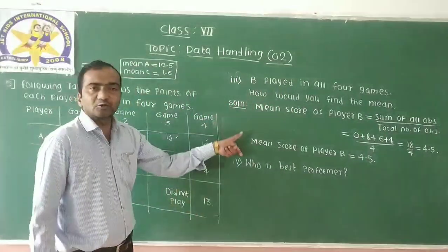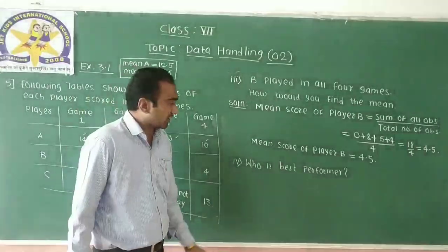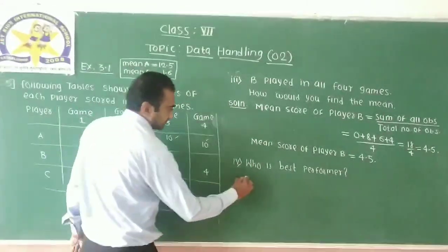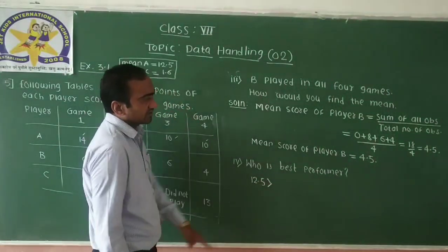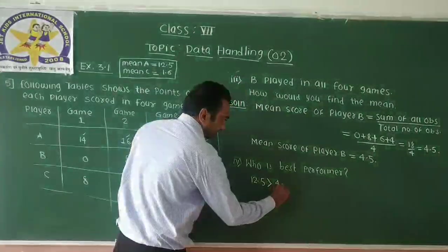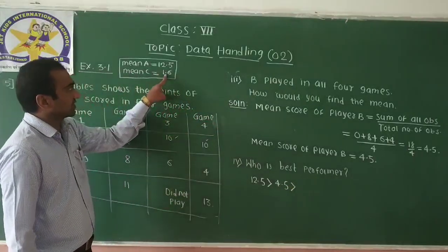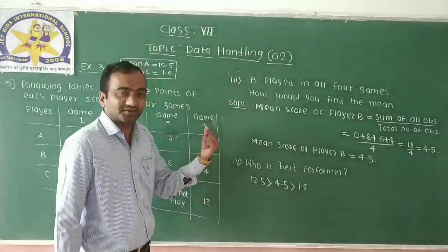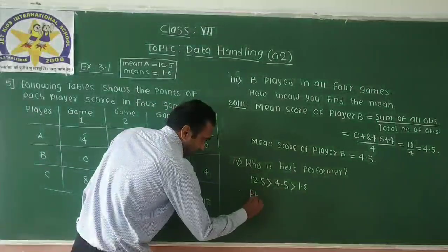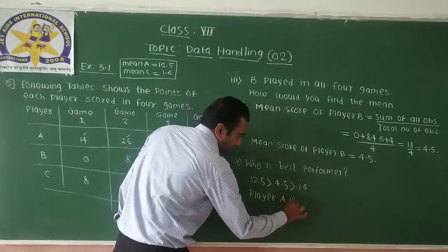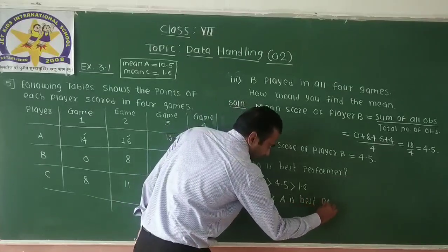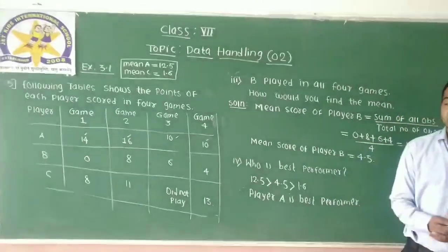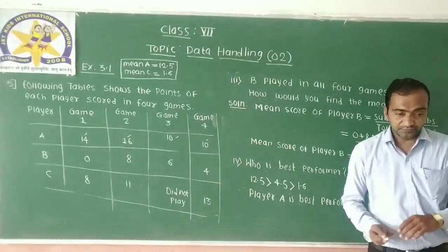Now the fourth question asks who is the best performer. Mean score of Player A is 12.5, which is greater than Player D's mean score of 4.5, and also greater than Player C's mean score of 1.6. So Player A is the best performer.